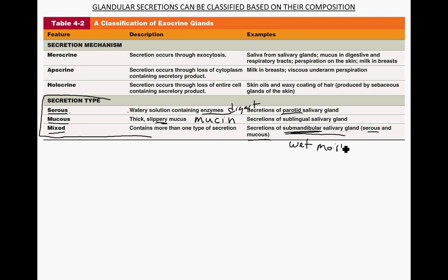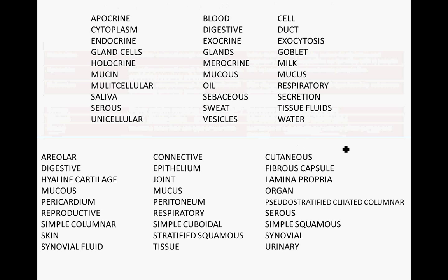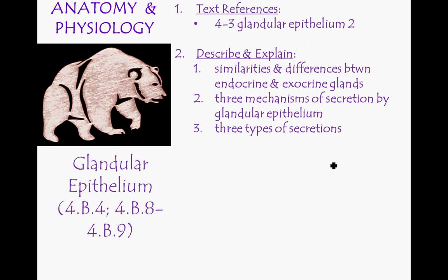To summarize, you should be able to take all of these vocabulary words and link them together in a graphic organizer or concept map, telling a story about epithelial cells, glandular secretions, and tissue fibers — a good summary for the first part of chapter four. You should be able to describe and explain the three mechanisms of secretion and the three types of secretions: mucus, serous, or a mixed type. Thanks for listening, and bring your questions to class.